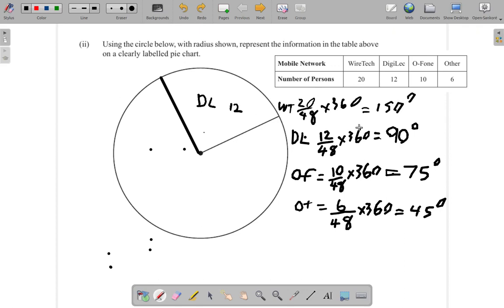And you have Wiretech, 150 degrees, kind of close to 180. Let me not do this. Let's put it about here, 150 degrees for Wiretech. The number in Wiretech is 20. We have 150 degrees here, this is 90 degrees.